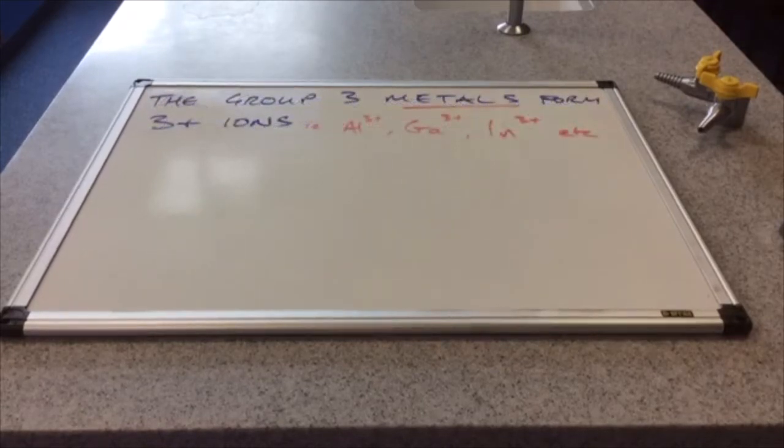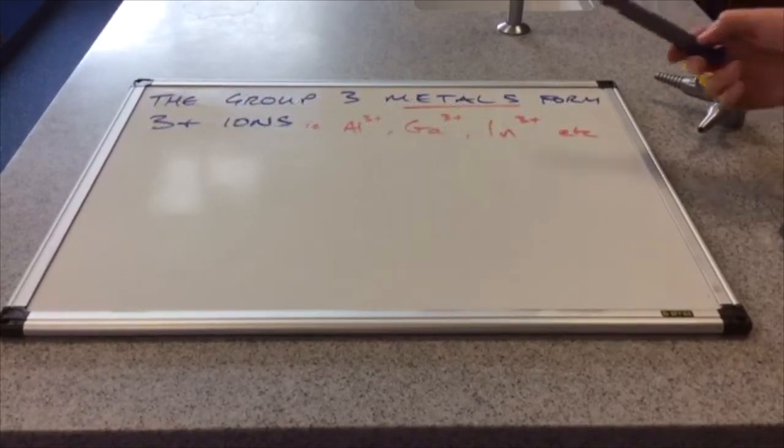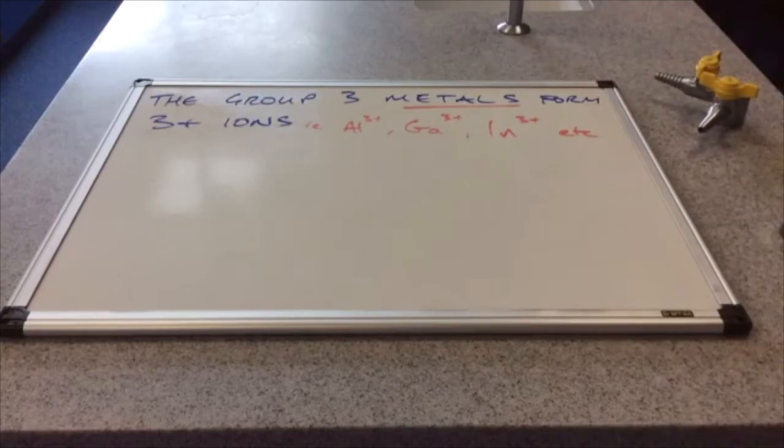And I just want to make the point with this one that it's the group 3 metals that form the 3+ ions. Remember, at the top of group 3 you've got boron that sits on the non-metal side of the dividing line. So that doesn't form an ion.